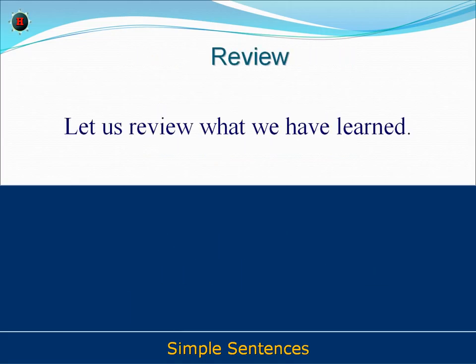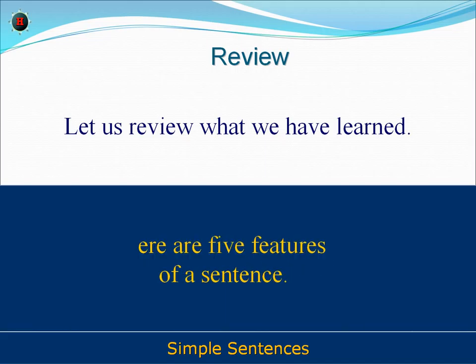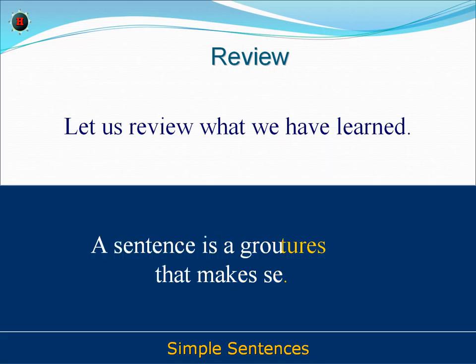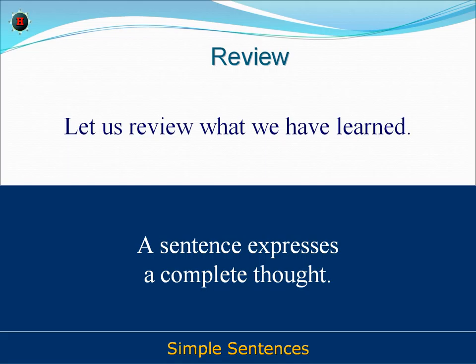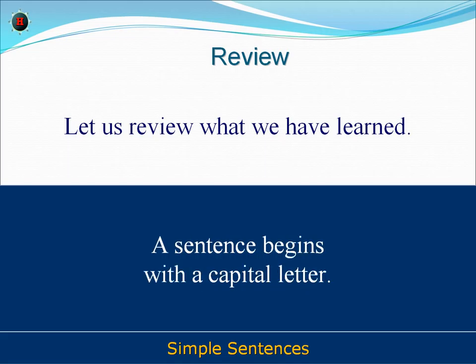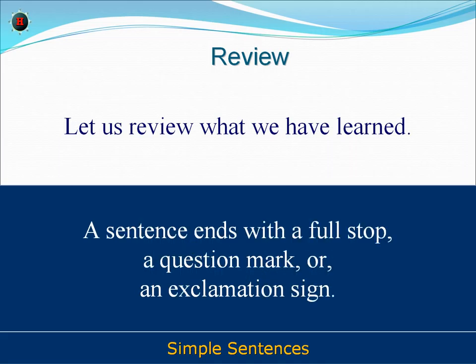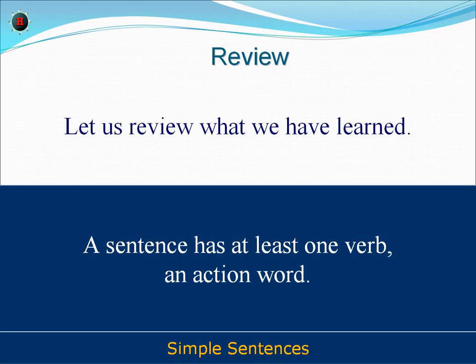Let us review what we have learnt. What is a sentence? Here are five features of a sentence. A sentence is a group of words that make sense. A sentence expresses a complete thought. A sentence begins with a capital letter and ends with a symbol — a full stop, a question mark, or an exclamation sign. A sentence has at least one verb, an action word.